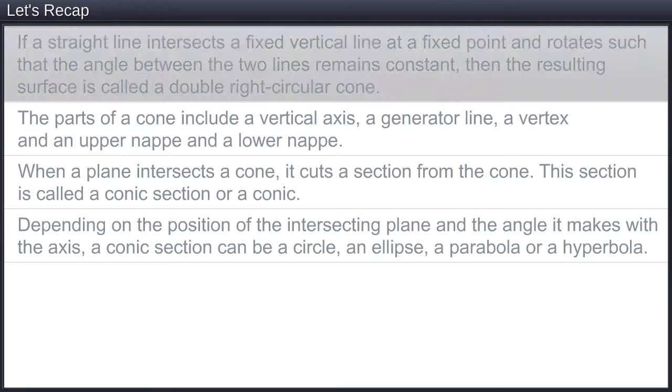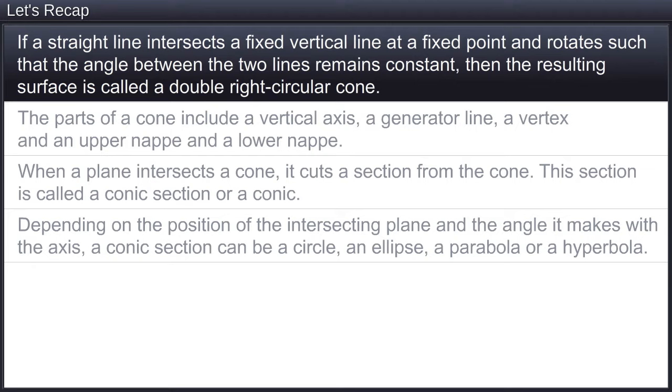In this module, you learned that if a straight line intersects a fixed vertical line at a fixed point and rotates such that the angle between the two lines remains constant, then the resulting surface is called a double right circular cone.